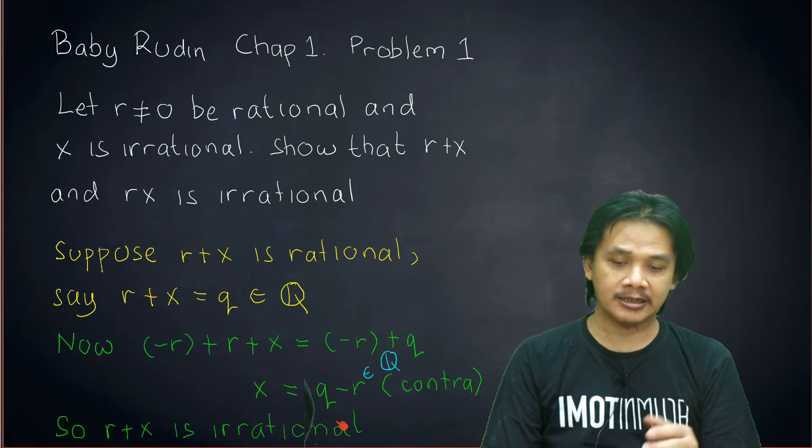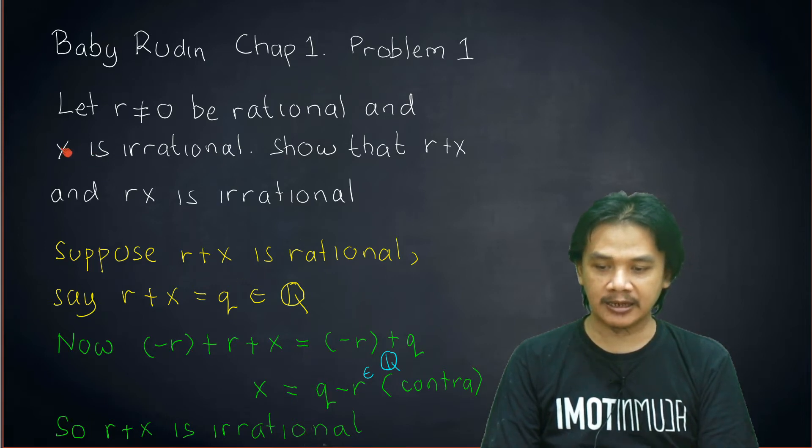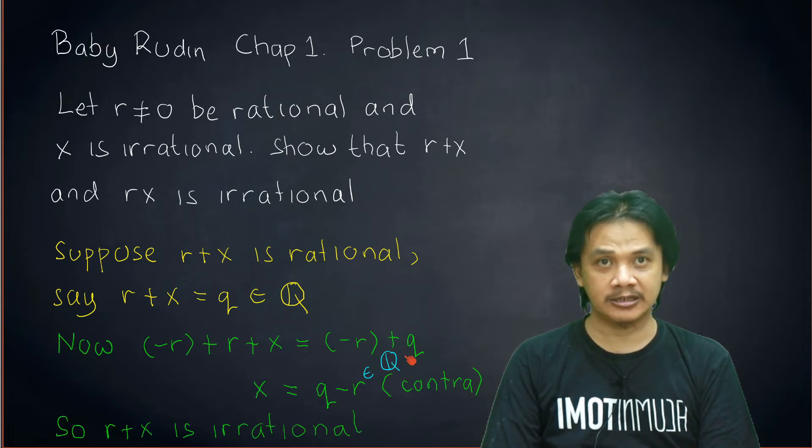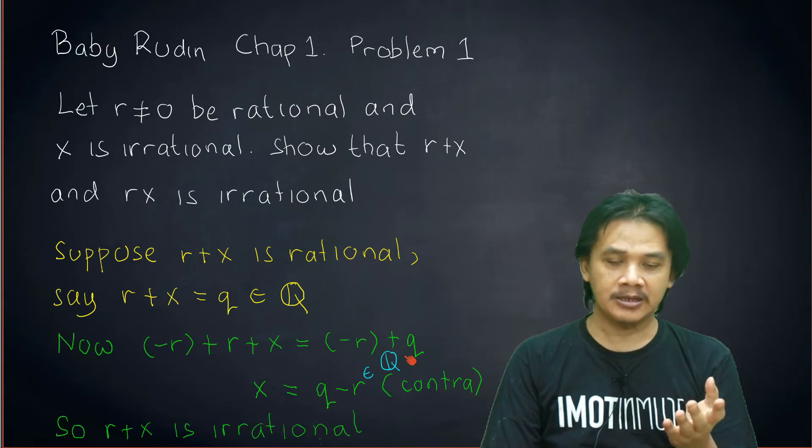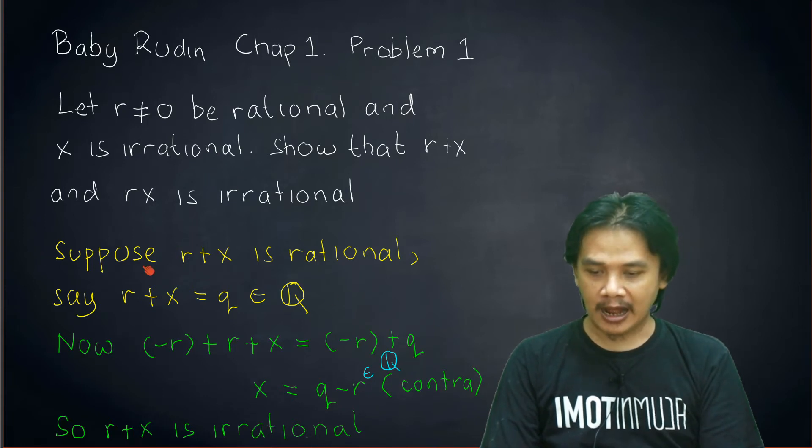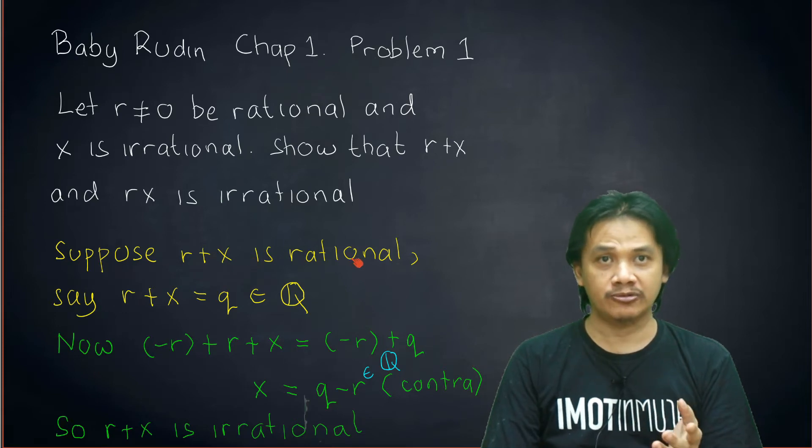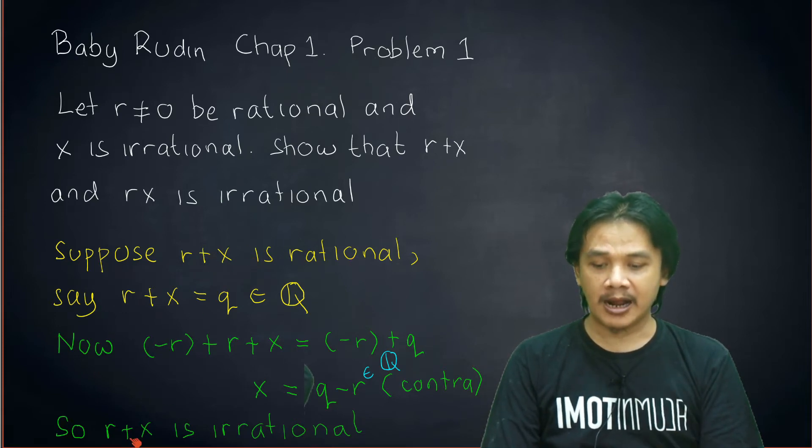Contradict which fact? Remember that at the beginning we said that x is irrational. Meanwhile here we have that x is in ℚ, so x is rational. So that's a contradiction. So then our supposition that r+x is rational cannot be true. So it must be false. Therefore, r+x has to be irrational.